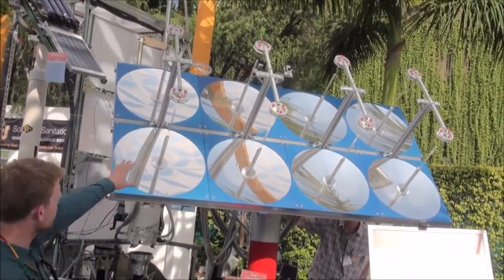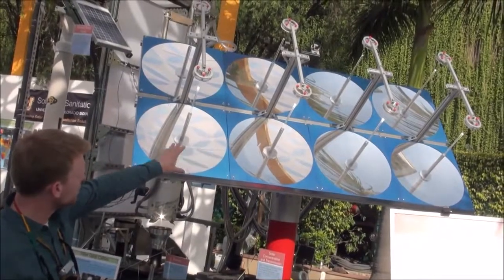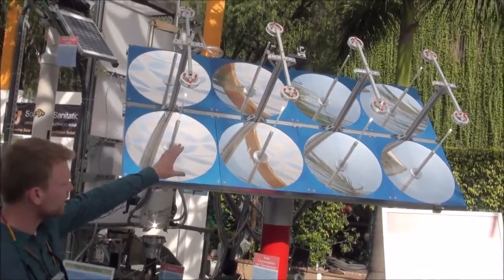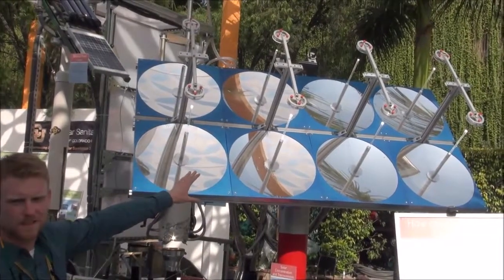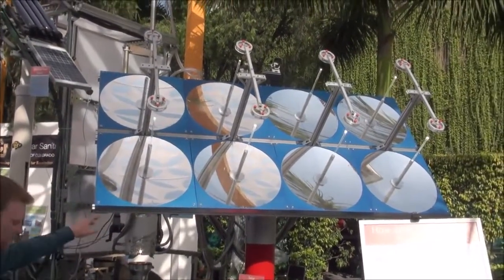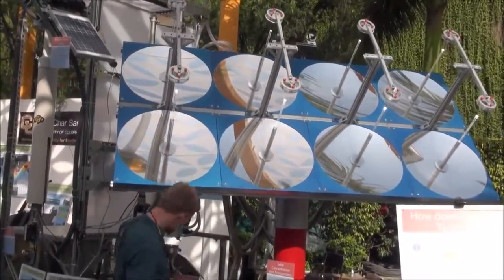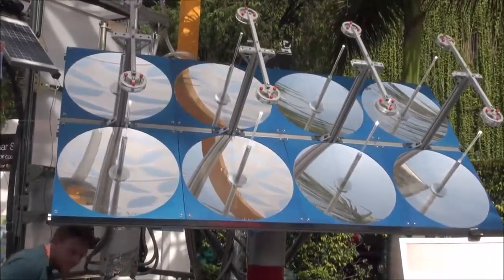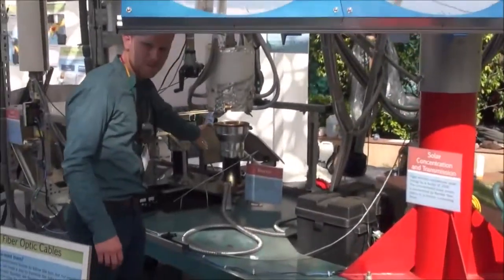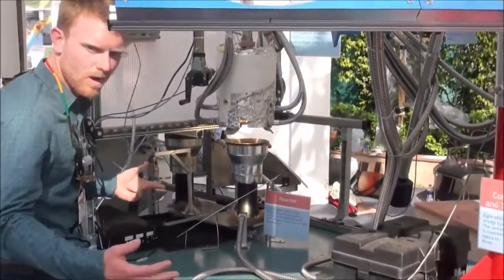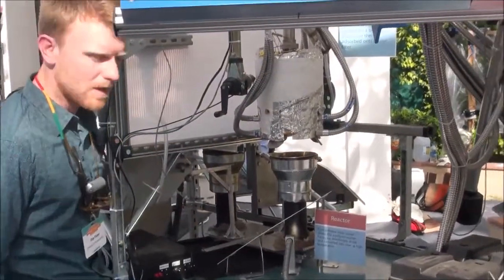So usually when this thing goes on sun you can see it tracking and it finds the sun, and then you see the quartz rods start to glow and that's where all that high energy flux is entering the system. It comes down through fibers to the reactor and eventually heats up the reactor, drives off all the water, and then eventually drives pyrolysis.